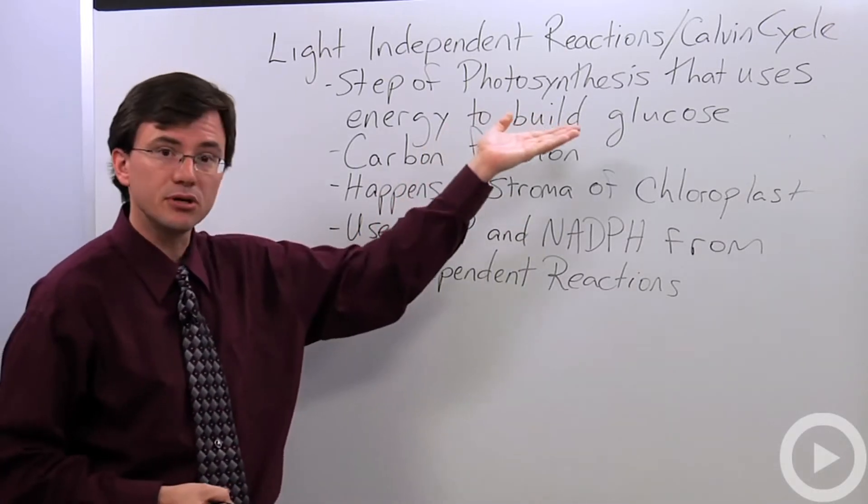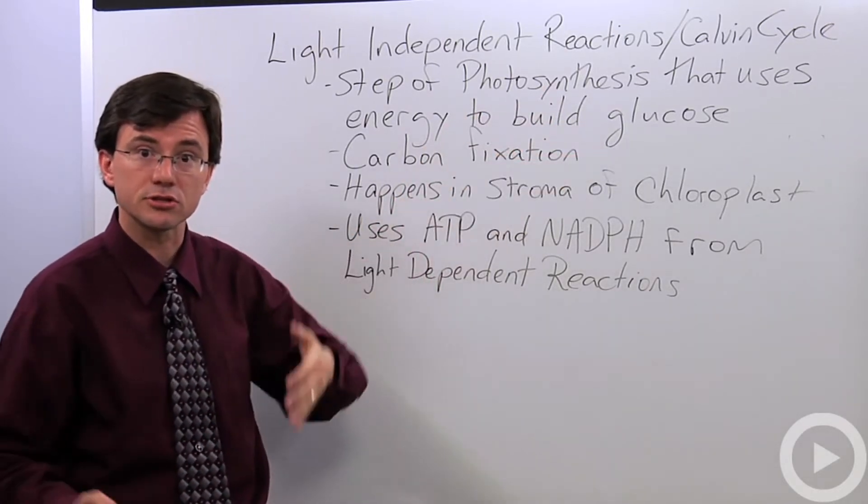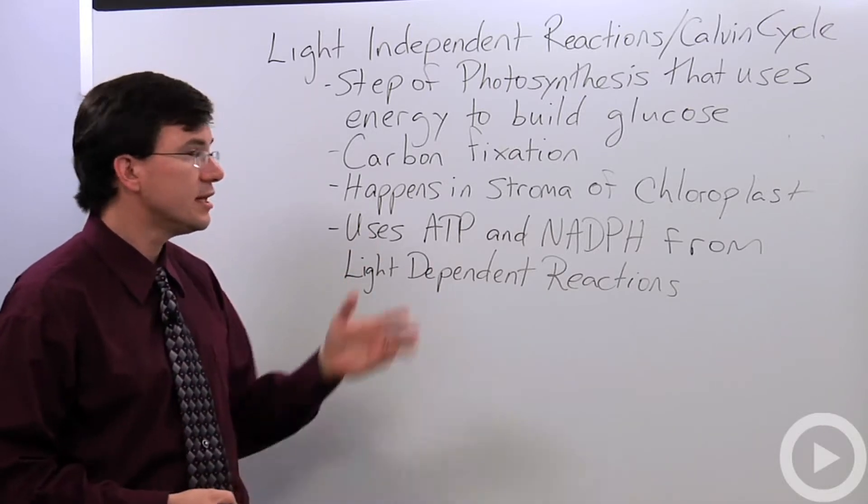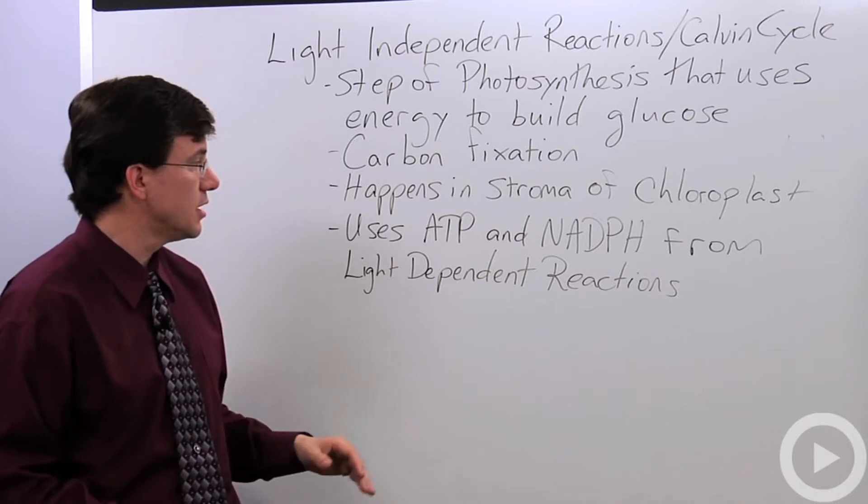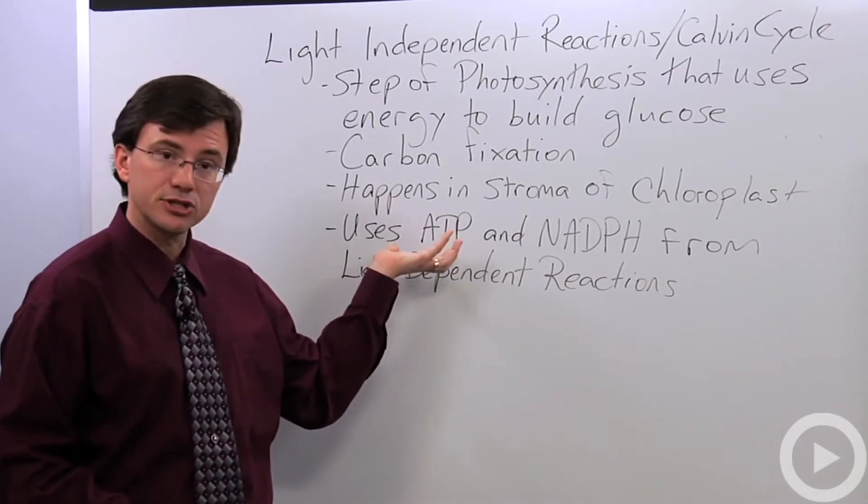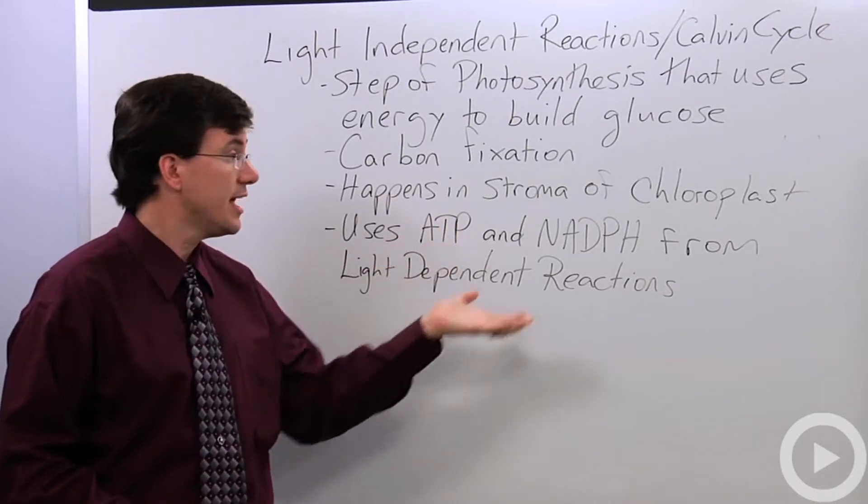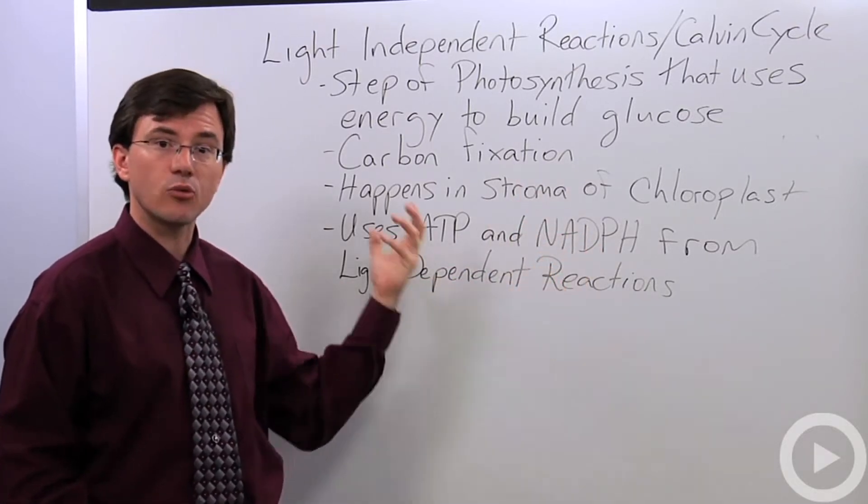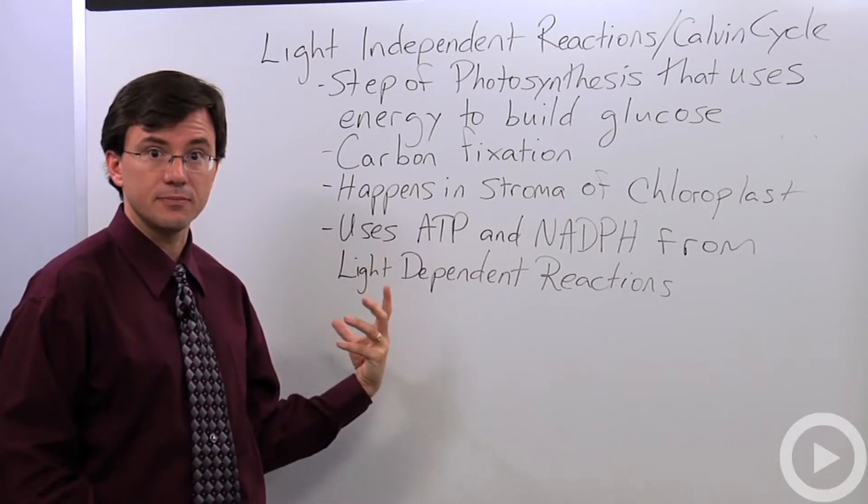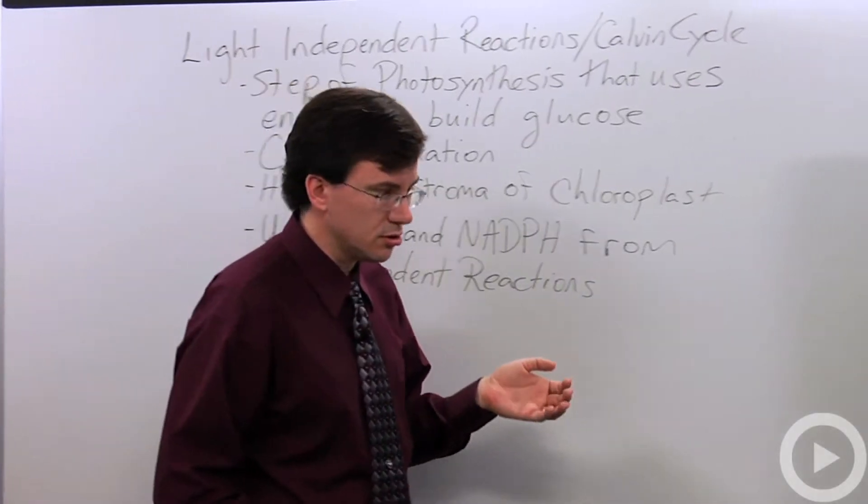So carbon fixation is the building of glucose or other sugars using carbon dioxide in the air. This happens in the stroma of the chloroplast, the organelle of photosynthesis. And it's using the energy that's in ATP molecules and the energy of the electrons being carried by NADPH that were being provided to the stroma by the light-dependent reactions. Let's take a closer look.